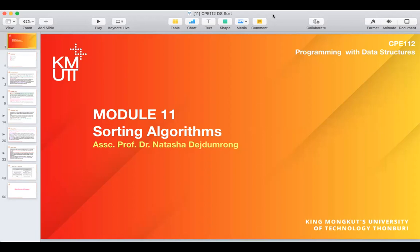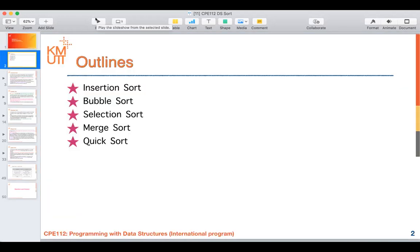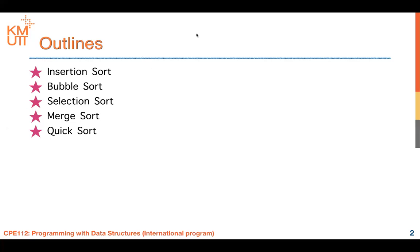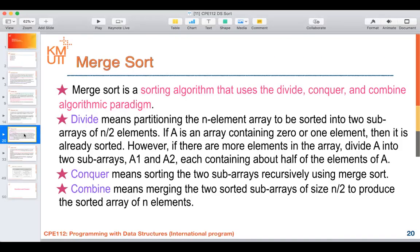In this session I will start from the previous class that was about sorting algorithms. Last time we talked about three sorting algorithms — the simple ones — starting from insertion sort, bubble sort, and selection sort, and we already tried to implement these three kinds of sorting algorithms. Today we will go to the next part: merge sort and quicksort, which I would like to finish by today.